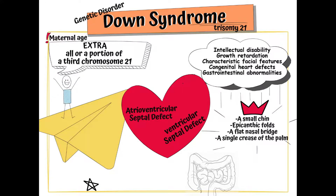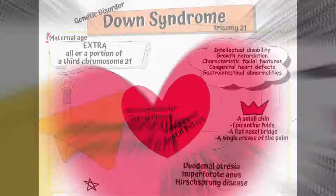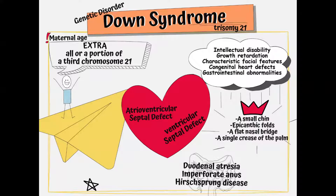Those with trisomy 21 have multiple types of structural and functional issues with the gastrointestinal system. Structural issues can be located anywhere from the mouth to the anus. These patients have a higher probability of developing specific defects, including duodenal and small bowel atresia or stricture, annular pancreas, anal atresia, and Hirschsprung disease.